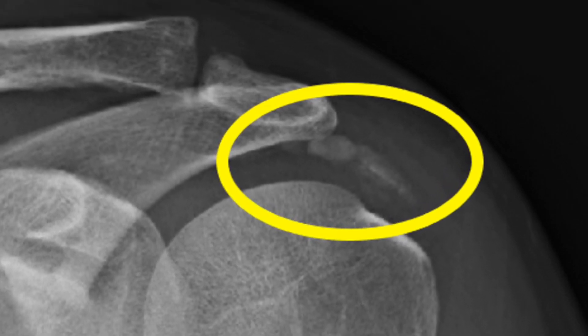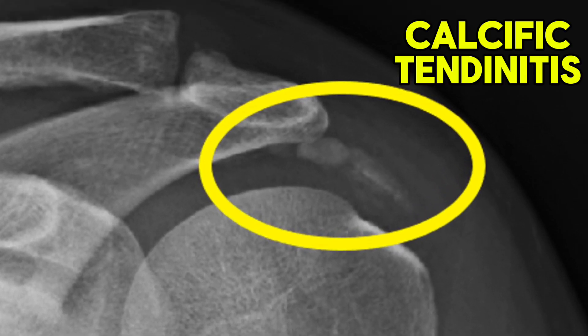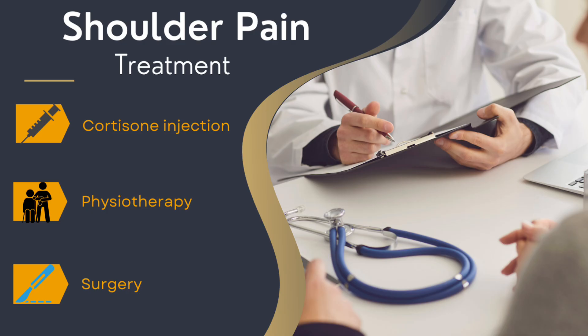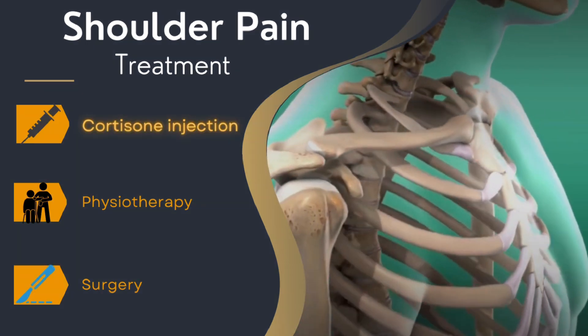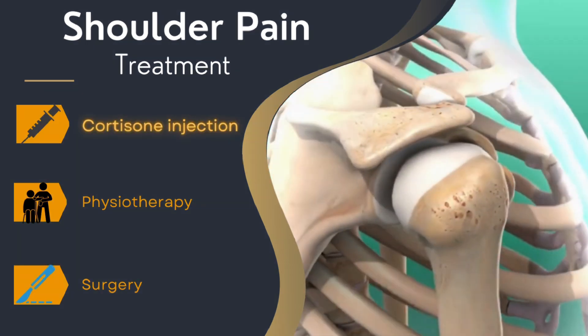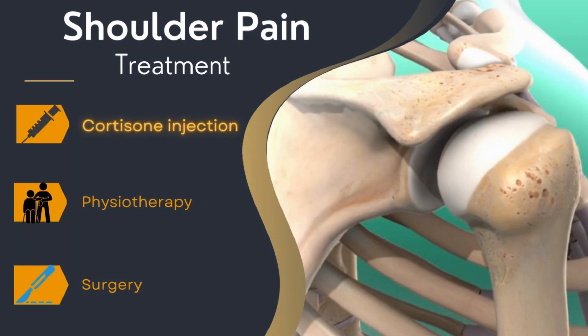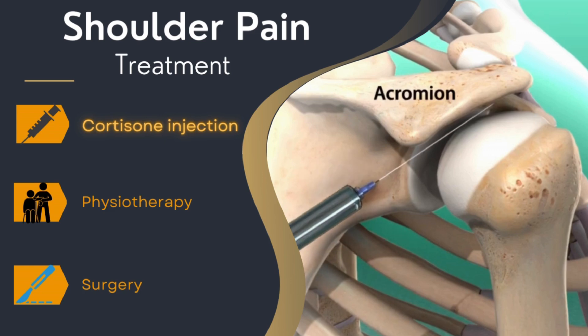This painful condition is also called calcific tendonitis. So what can be done about this painful condition of your shoulder? Let's go through these options. Cortisone injection is an excellent option to relieve pain — it works by reducing the inflammation of the bursa and rotator cuff.